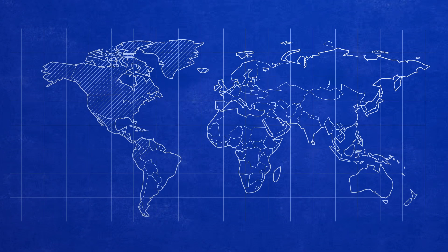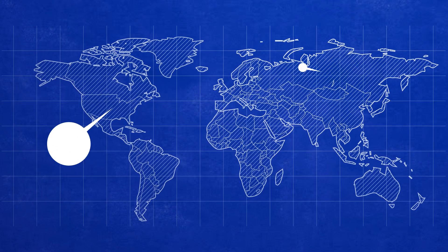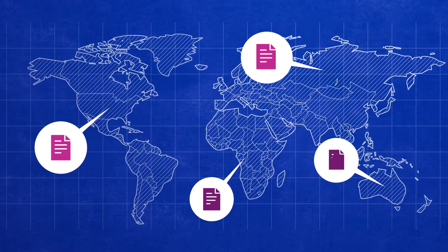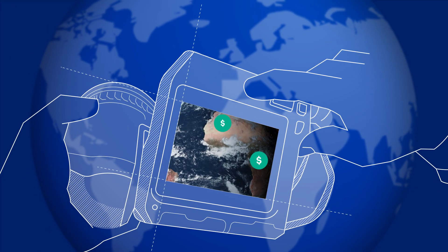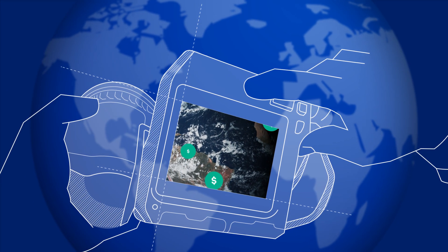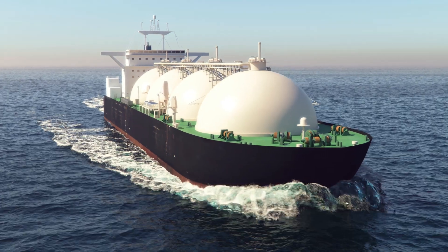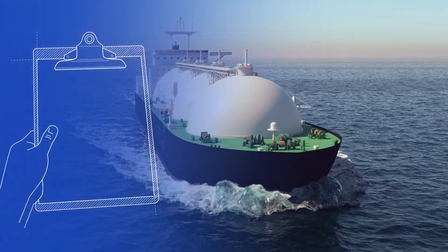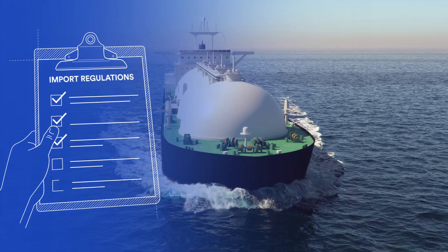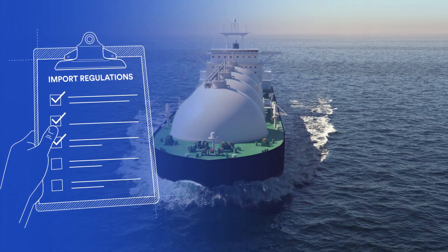Countries with significant fossil fuel production must implement strong standards to limit methane emissions across the supply chain. They could also impose fees on companies that do not properly control their methane pollution. Large buyers of fossil fuels can drive these changes by setting strict import standards to push nations that produce oil and gas to accelerate cleanup of their systems.